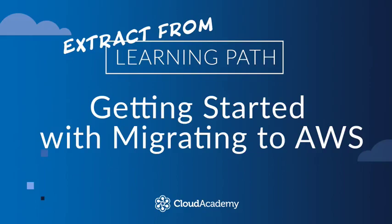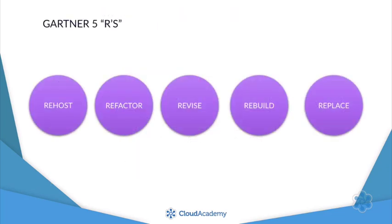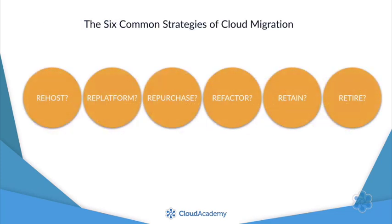Hello and welcome back. In this lecture, we are going to learn how to recognize and explain the six R's, or the six common strategies used when discussing cloud migration projects. In 2011, Gartner Group outlined five common migration strategies, which provided a great benchmark for discussing and defining migration strategy in the early days of public cloud adoption. Over the fullness of time, that has evolved into six definitions, which were commonly used when discussing migration to cloud services.